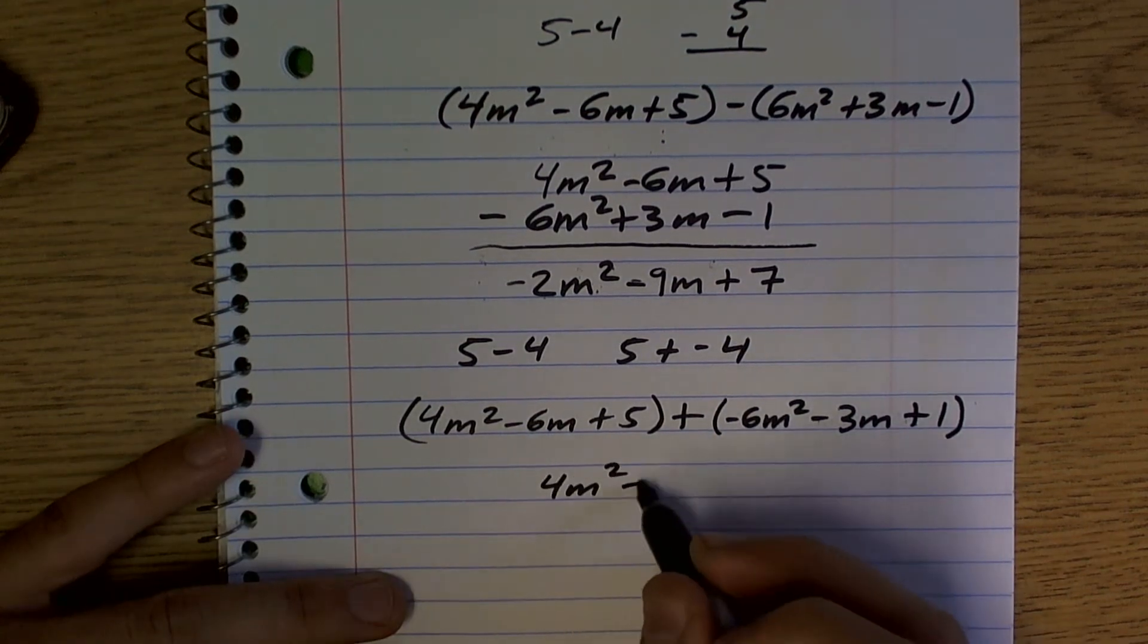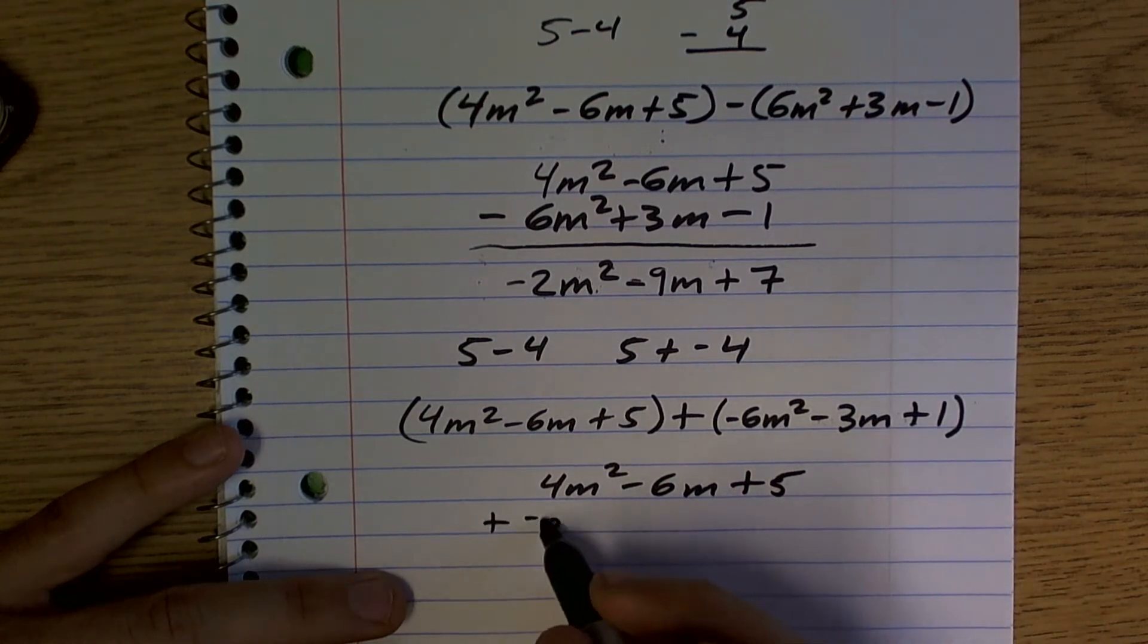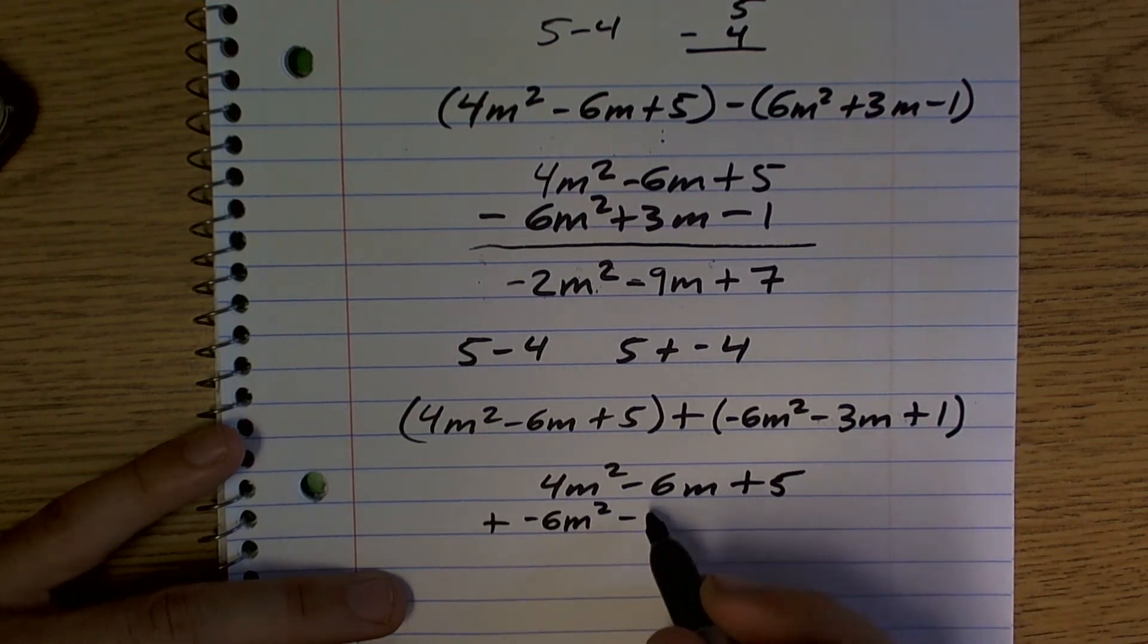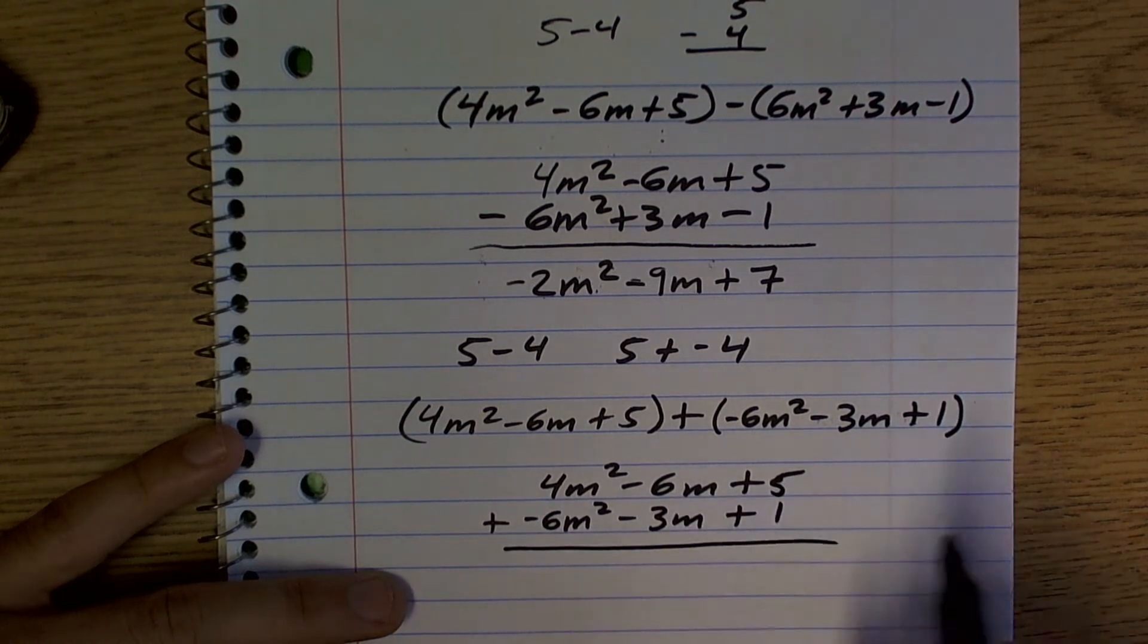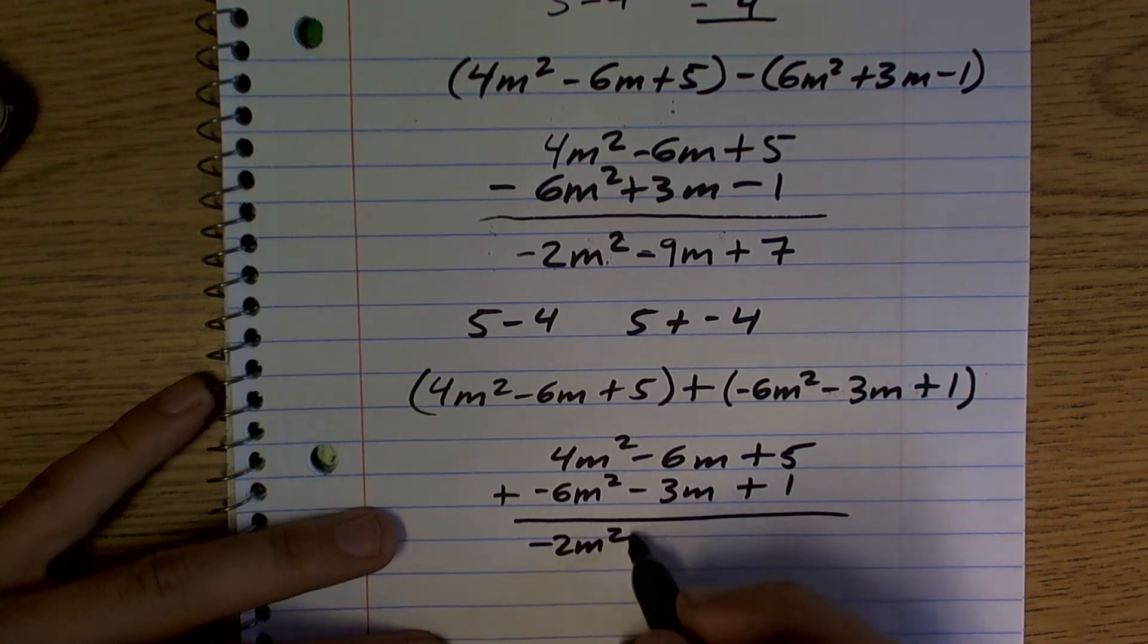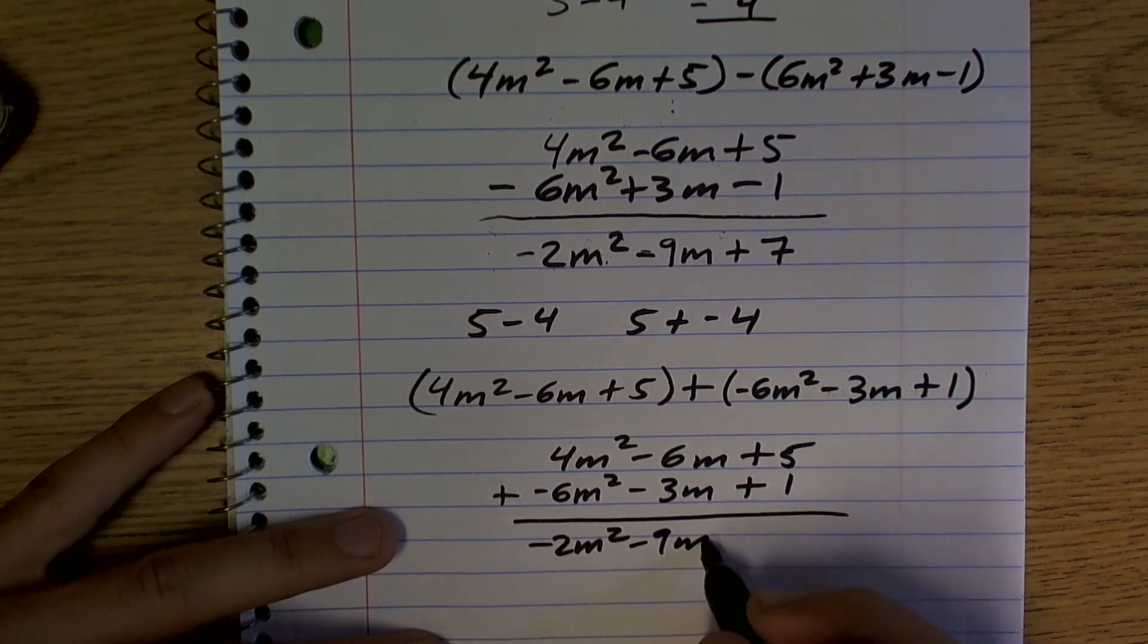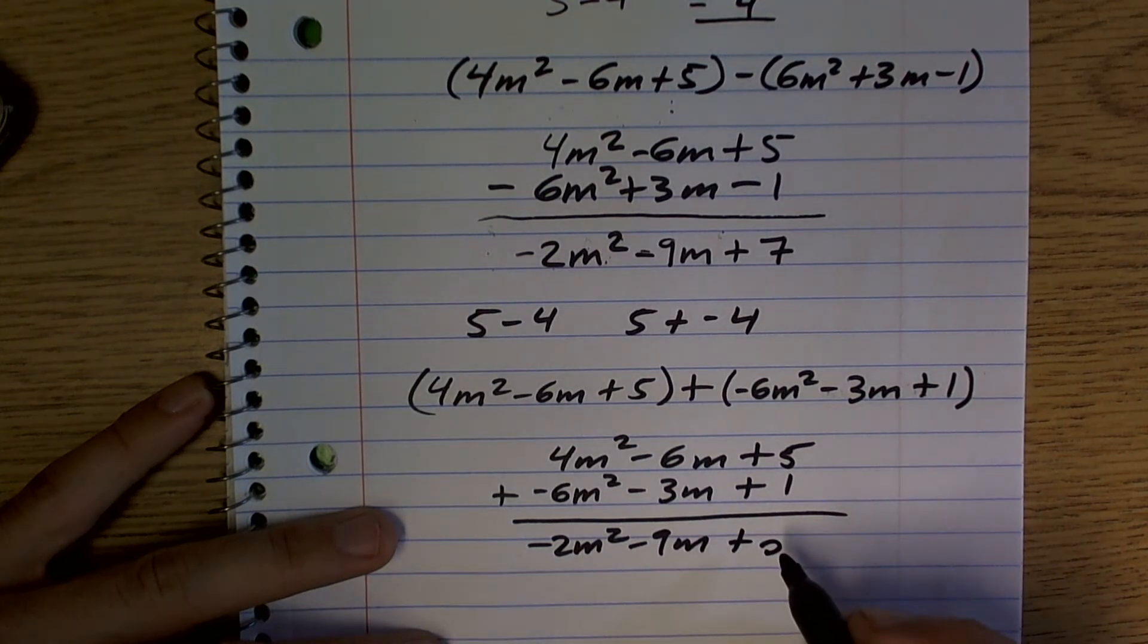And usually this method is preferred, so you're not going to be making as many mistakes because most of us don't make as many mistakes with addition as we do with subtraction. So now you just add 4M squared plus a negative M squared, negative 2M squared, negative 6M plus negative 3M, negative 9M. 5 plus 1 is 6.